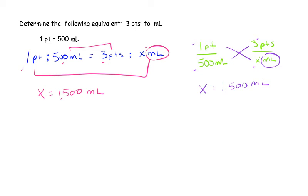Just so that you know, if you wanted to, we could have set up with 500 mL on top, and put 1 pint on the bottom. And on this side, we would have just put x mL on the top, and put the 3 pints on the bottom. Because again, if we start this equation with mL on the top, this side needs to be mL on top. Either way, it comes out to the same answer.